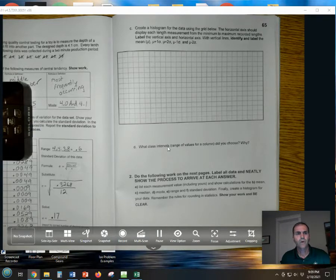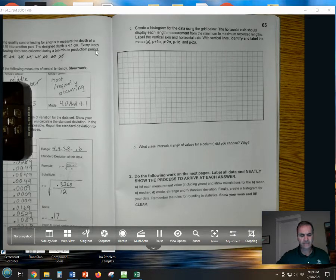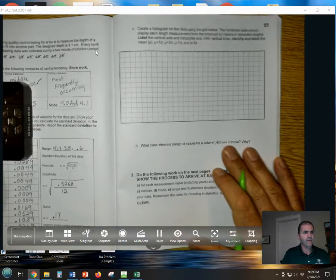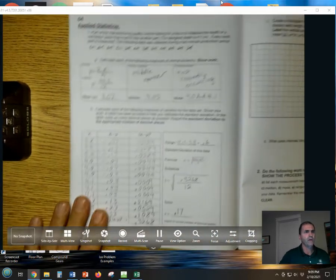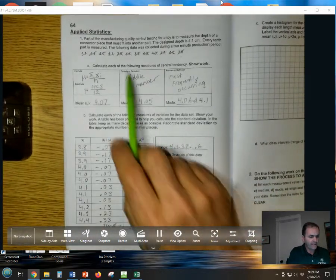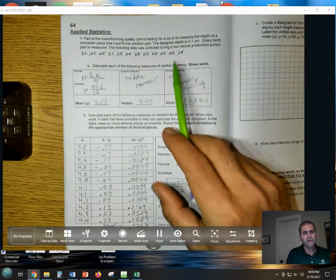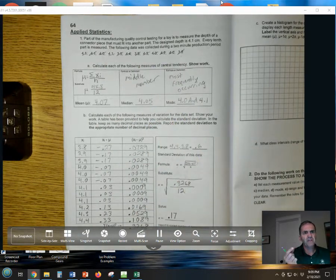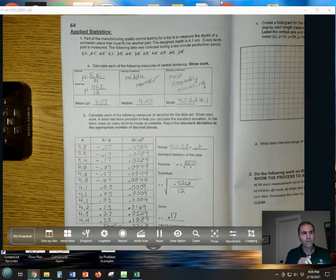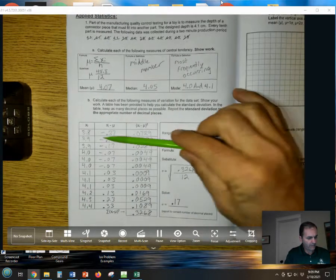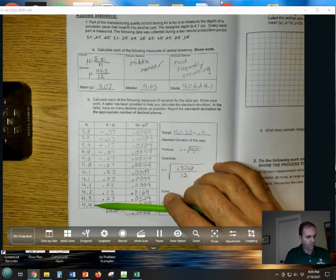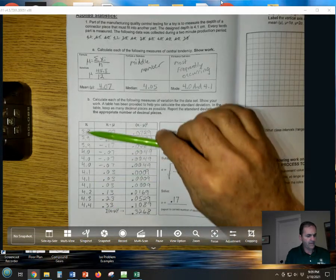All right guys, so here we are looking at the next page of working on our statistics stuff. Last time, if you recall, we had a data set of 12 numbers that were measurements of a connector piece. These are what the measurements were of these pieces.